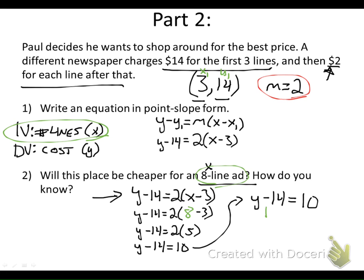If I see a minus 14, I'm going to add 14 to each side to isolate the Y, and I get that Y is 24. In other words, the ordered pair (8, 24) is on this line. So for eight lines it costs us $24.